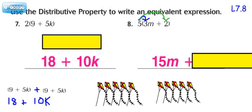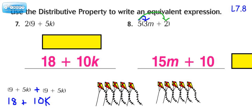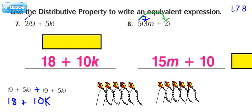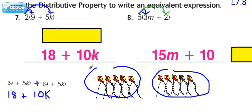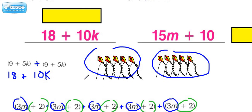Now if we use that same idea to help us with number 7, we could have done 2 times 9 to get 18, and then 2 times 5k — because we have 2 of those — to get 10k. Alright, hope you found this helpful.